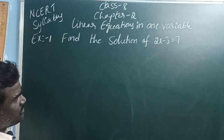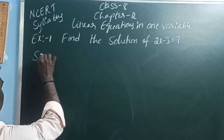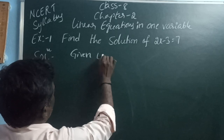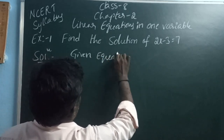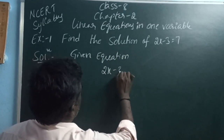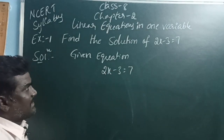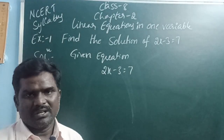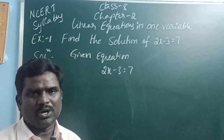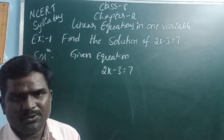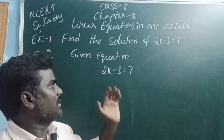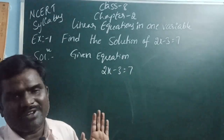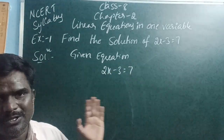Example 1: Find the solution of 2x minus 3 is equal to 7. Given equation is 2x minus 3 equals 7. Solution, zero, or root means the value of the variable. The numerical value you substitute in place of the variable that satisfies the equation — that is, LHS equals RHS — is called the zero, root, or solution.